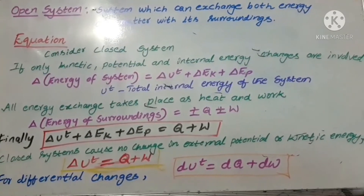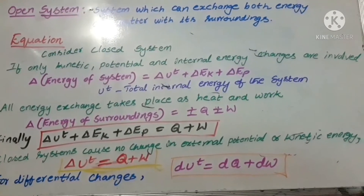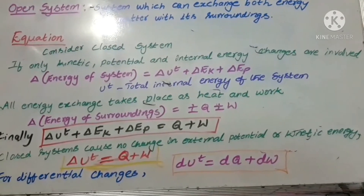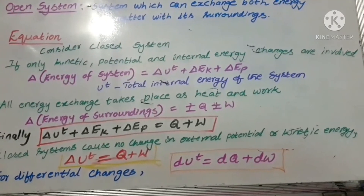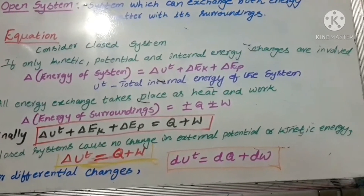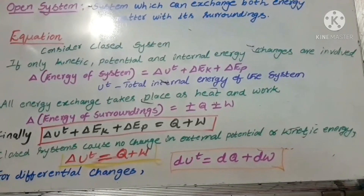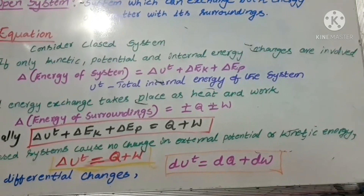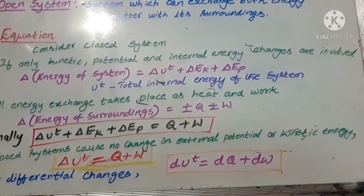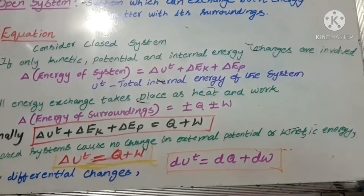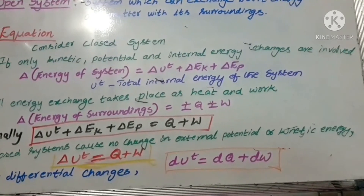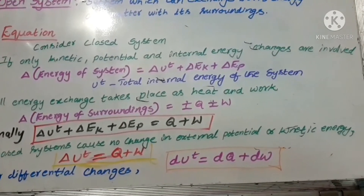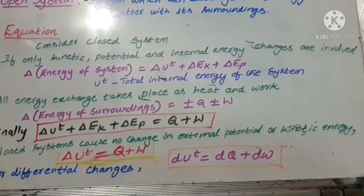For the closed system, if we consider only kinetic, potential, and internal energy changes, then delta of energy of system equals delta Ut plus delta Ek plus delta Ep, where Ut is the total internal energy of the system, delta Ek is the kinetic energy of the system, and delta Ep is the potential energy of the system.